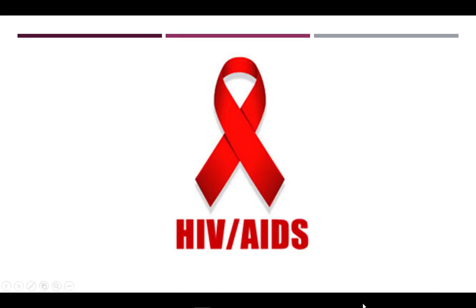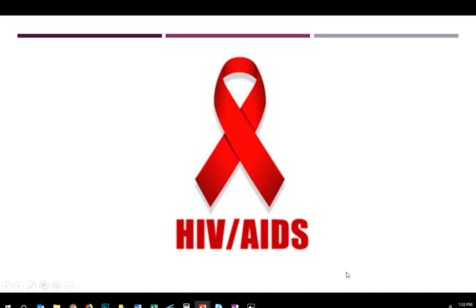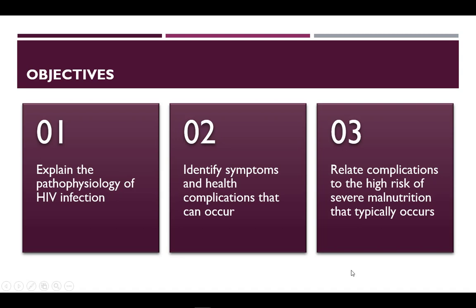HIV and AIDS have both physical and nutrition implications that can lead to malnutrition and threaten a person's life. In this video, we will explain the pathophysiology of the infection, identify symptoms and health implications that occur, and relate complications to the high risk of malnutrition that typically occurs.